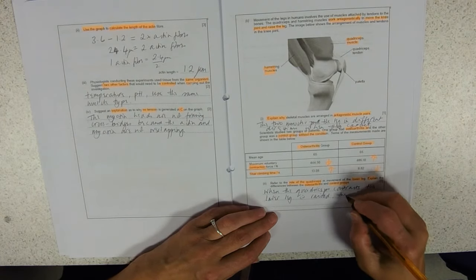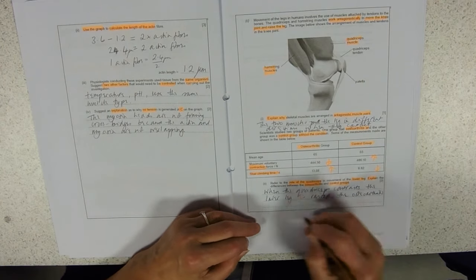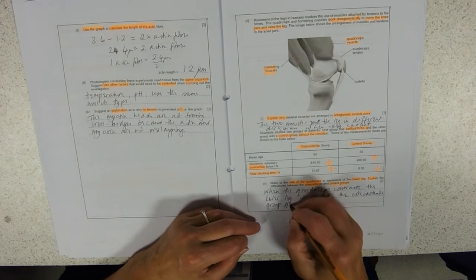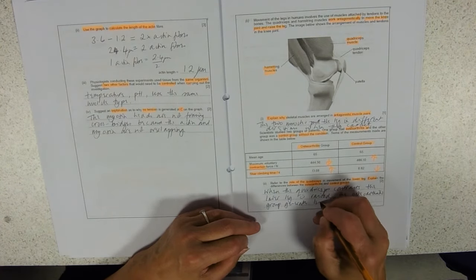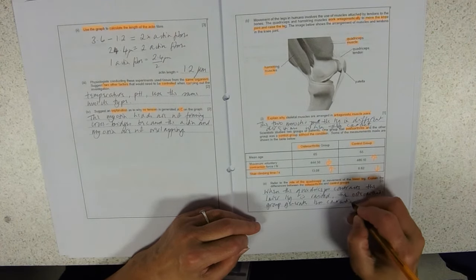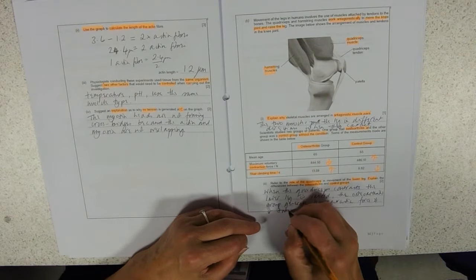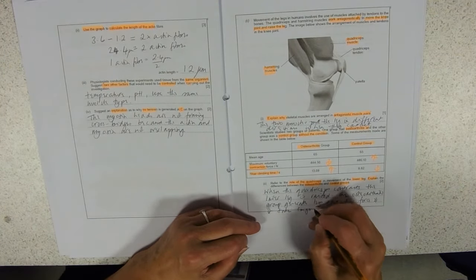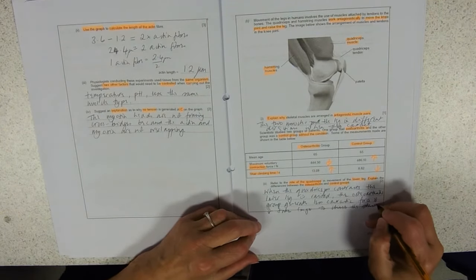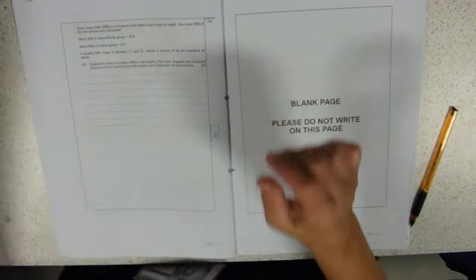The osteoarthritis group generate less contraction force. And it takes longer to climb stairs. Which I think from my own experience is probably true.